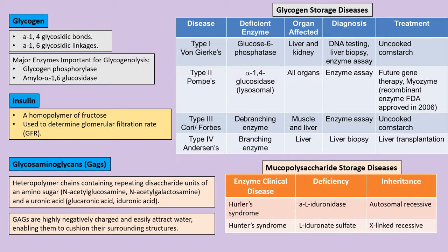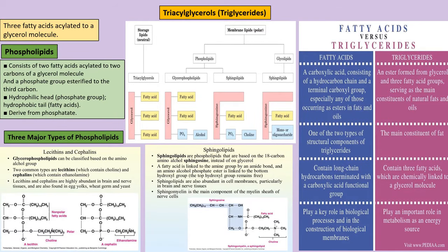Most storage diseases are autosomal recessive except Hunter's, which is X-linked recessive. Triacylglycerol is the mobile form of fat in the liver, while triacylglyceride is the storage form of fatty acids in adipose tissue. Triacylglycerol consists of three fatty acids esterified to a single glycerol molecule and is an important source of energy, though high triglycerides can lead to atherosclerosis, heart disease, and stroke.